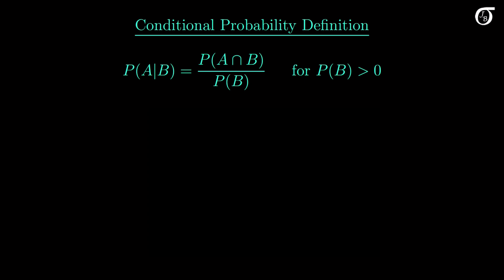This isn't often a meaningful restriction in practice, as we aren't typically interested in conditioning on events that have no chance of occurring. So that's the definition of the conditional probability of event A given event B has occurred.